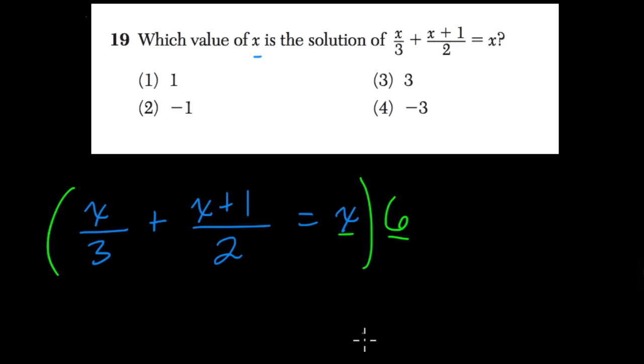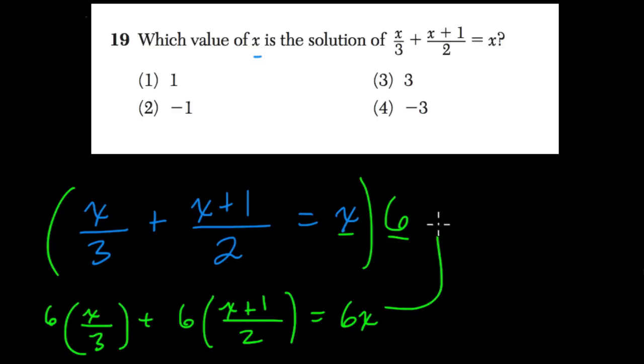So what's 6 times x? That's 6x. And then 6 times this term, we'll just set that up. And then 6 times this term, multiplying everything by 6. So what's going to happen?